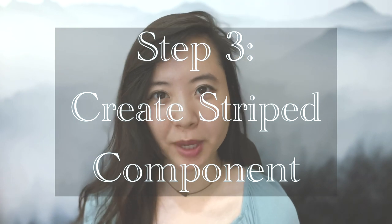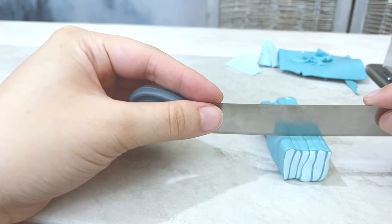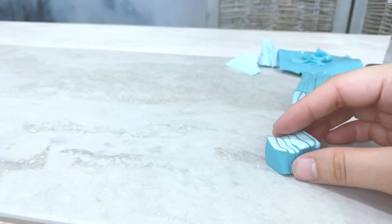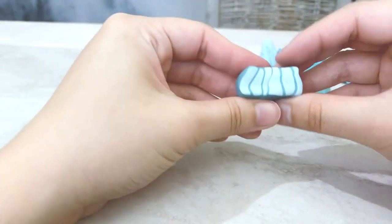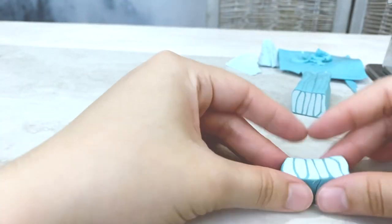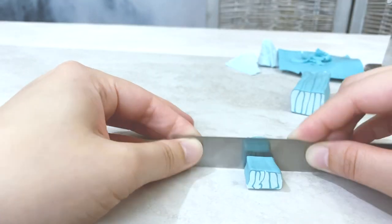Step 3: Create Striped Component. Take your stripe cane from step 2 and slice off about half an inch. We are going to take this and create our first component for the design. So reduce this piece to elongate it. We are going to then cut this in half and combine again.